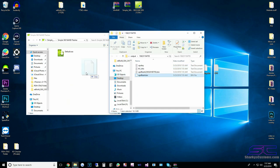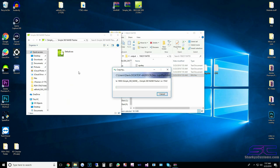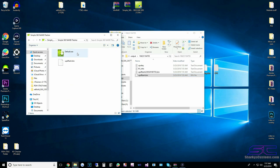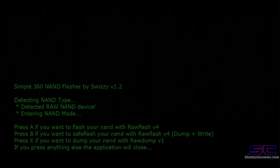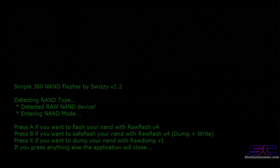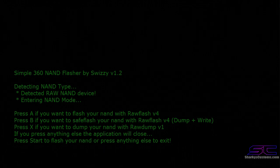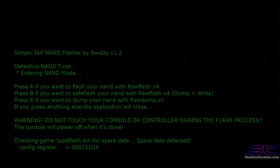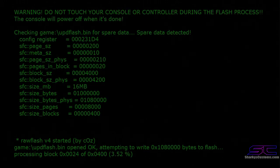We just need the updflash.bin — we don't need all the other files, just this one. Drag and drop it right in there. Now double-click the default.XEX which will start Symbol360 NAND Flasher. We're going to press A to flash our NAND, then press Start to flash it.